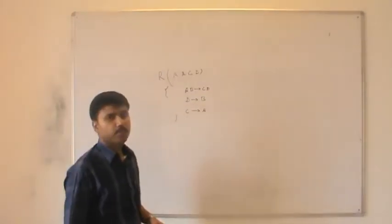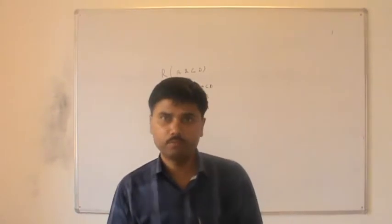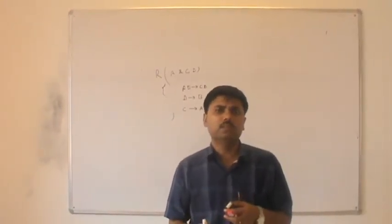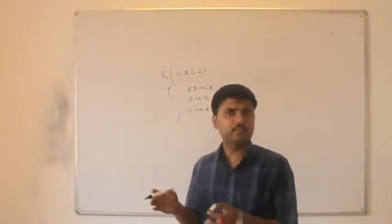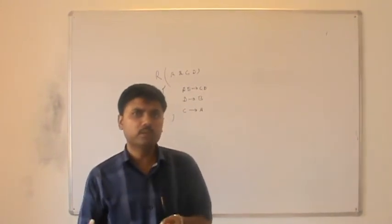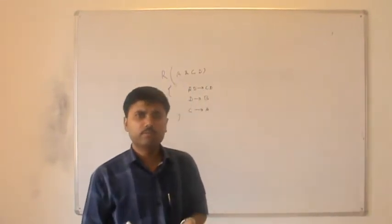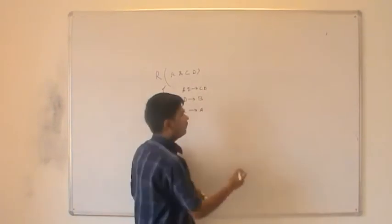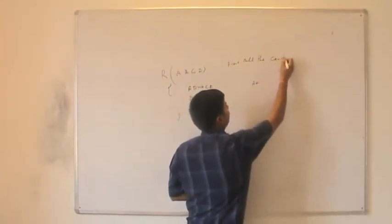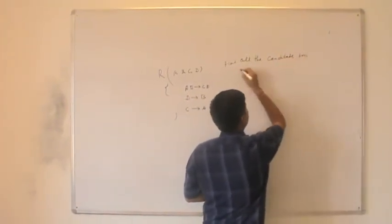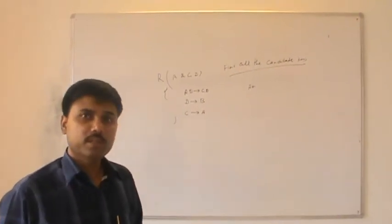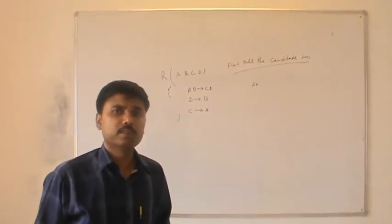In this new example, we have to find all available candidate keys. The approach is the same. We have to perform the same closure exercise repeatedly until we are satisfied we have found all candidate keys. It is an exhaustive process, but I will also illustrate some hints or tricks to find all candidate keys easily.